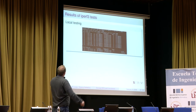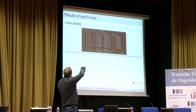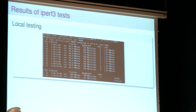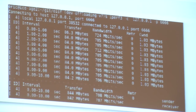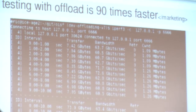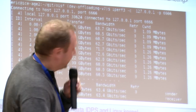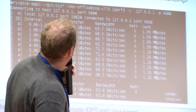In local testing with NFQ enabled on loopback using iperf, we get around 700 megabytes per second. With offloading enabled, we switch to 63 gigabytes per second — because routing without NFQ is far faster than sending packets to user space.